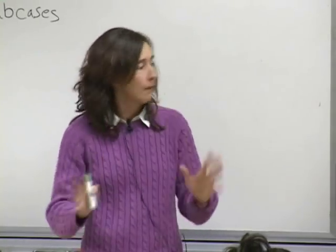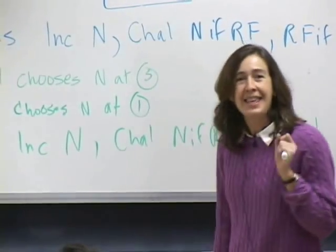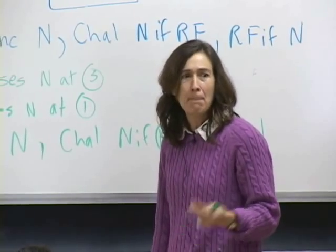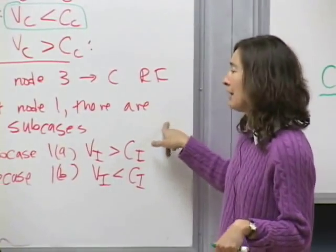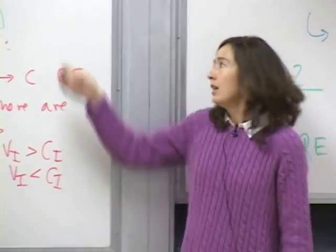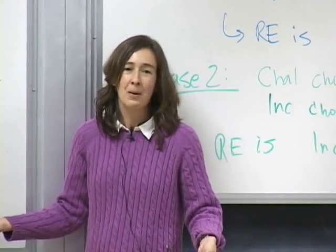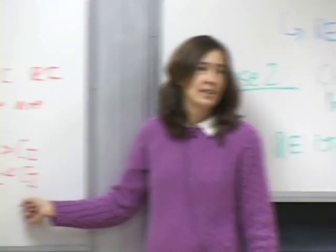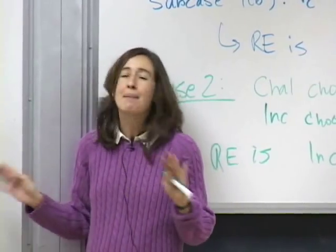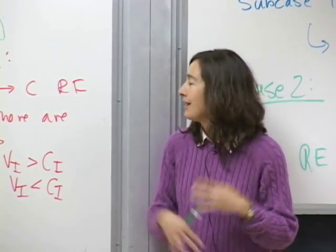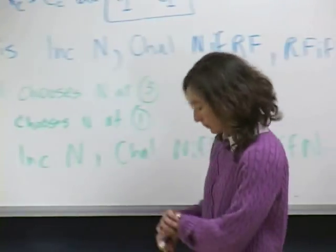Each individual step is very easy—you shouldn't feel nervous if it seems trivial to say a negative number is less than zero. What can make game theory challenging, especially at this stage, is that there are just a lot of steps. The rollback process helps organize those many steps. No individual step is hard; it's just remembering how to put them all together, and not being freaked out by how many steps there are. If you've divided things into cases and now have subcases too—don't panic. It's completely normal.